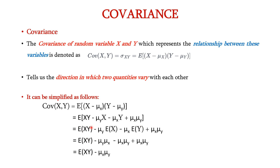Applying expectation for individual terms we can write it as E of x y minus mu y into E of x minus mu x into E of y plus mu x into mu y. Since E of x equals mu x and E of y equals mu y, the terms minus mu x mu y and plus mu x mu y cancel. So the final formula is E of x y minus mu x mu y. That is the covariance simplified as E of x y minus mu x into mu y.